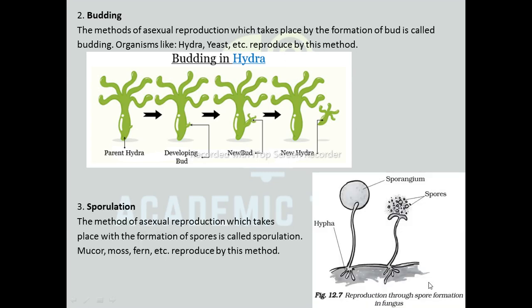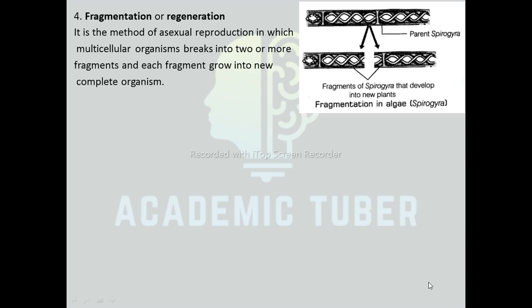Sporulation: The method of asexual reproduction which takes place by the formation of spores is called Sporulation. Mucor, Moss, Fern, etc. reproduce by this method. Here is a diagram showing Sporulation in Mucor. Fragmentation or Regeneration: It is the method of asexual reproduction in which a multicellular organism breaks into two or more fragments and each fragment grows into a new complete organism. The term Fragmentation is used for plants and Regeneration for animals. Here is a diagram showing Fragmentation in the alga Spirogyra.